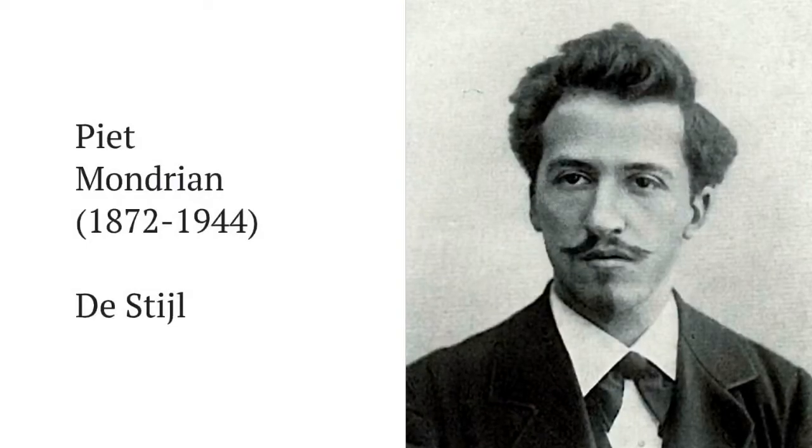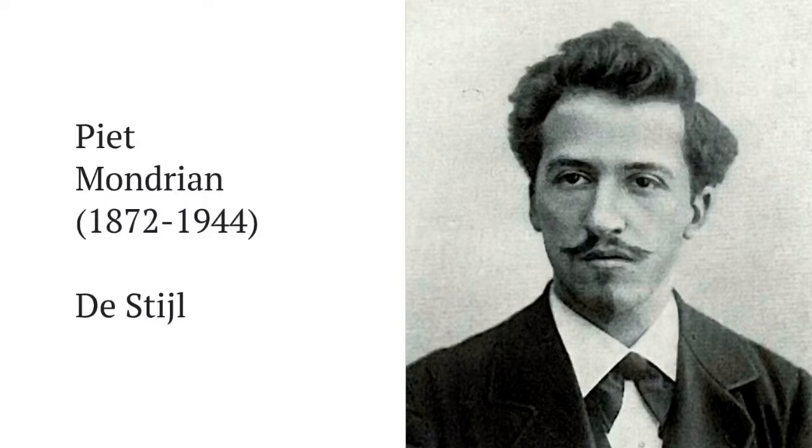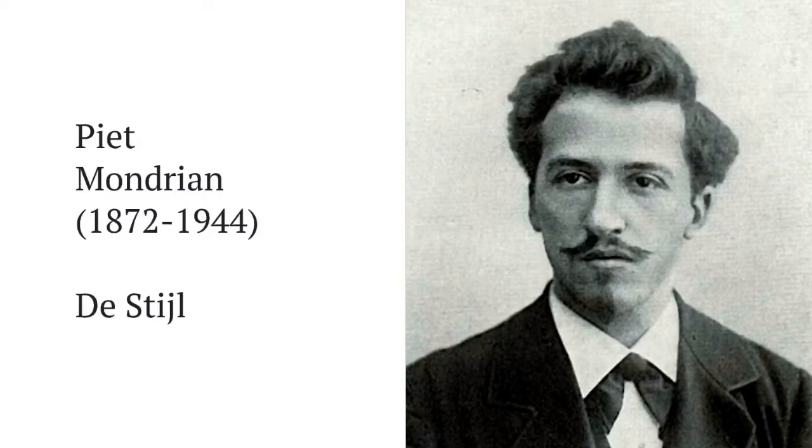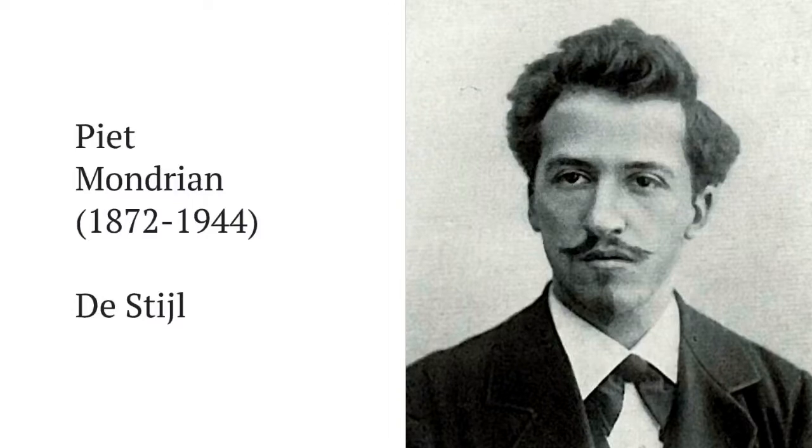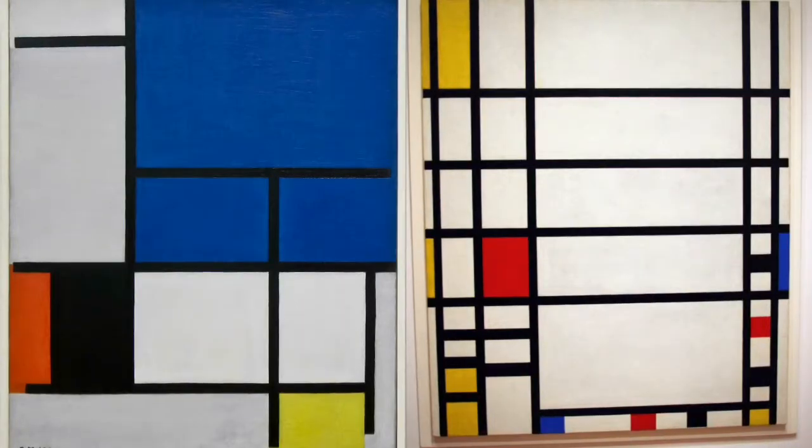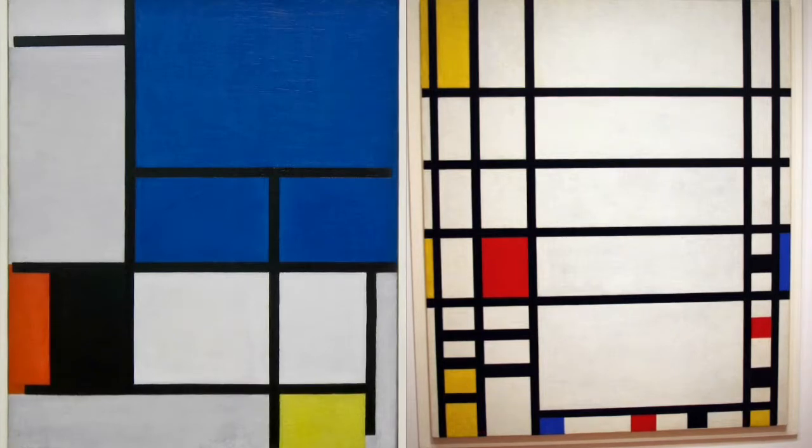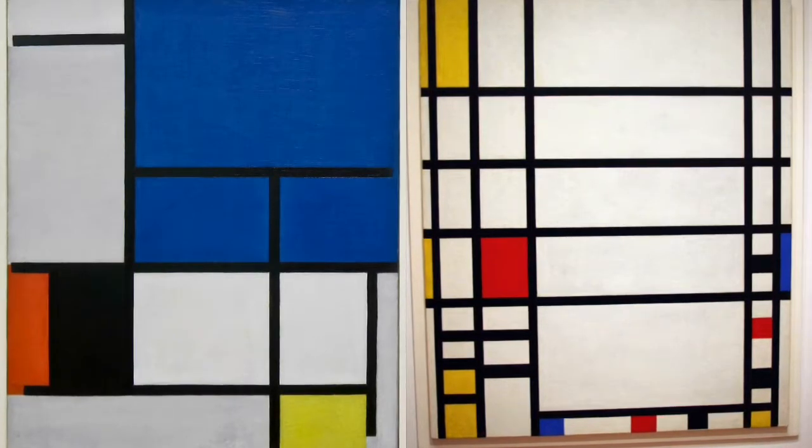Allow me to introduce you to Pete Mondrian, a very famous artist and school teacher who lived from 1872 until 1944. His paintings were very unique or different from other paintings.